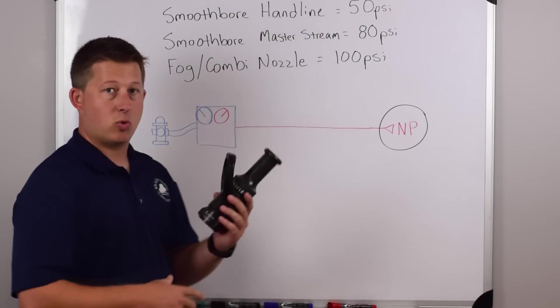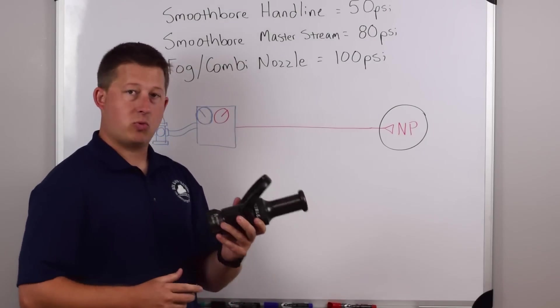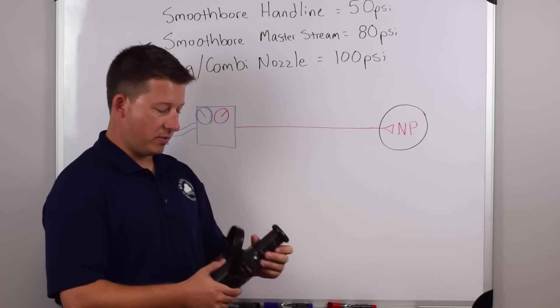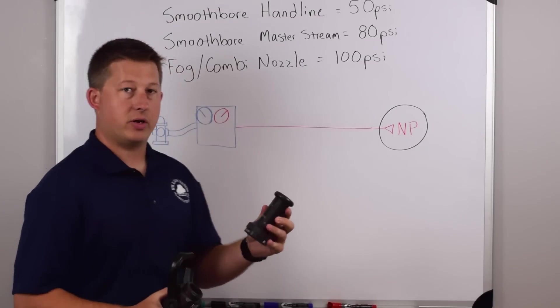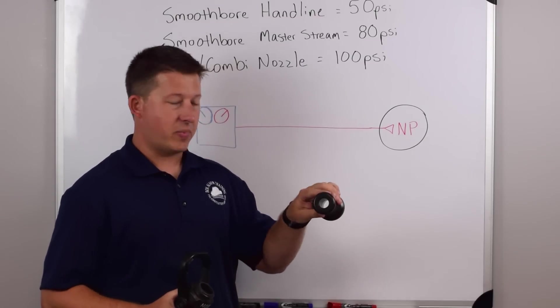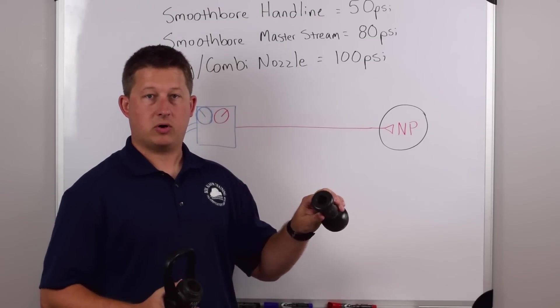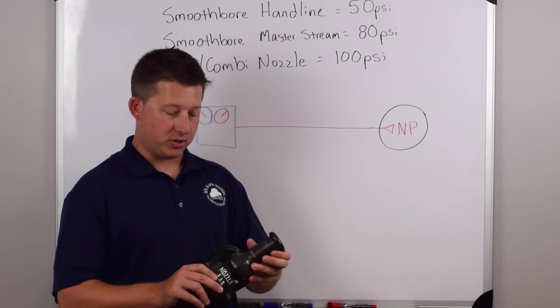First one we're going to look at is a smoothbore hand line. That's basically a smoothbore nozzle. Many of these have a tip that you unscrew. The only way for you to change the gallonage of this nozzle is to make the hole bigger or smaller. There is no pattern adjustment and there is no gallonage adjustment.